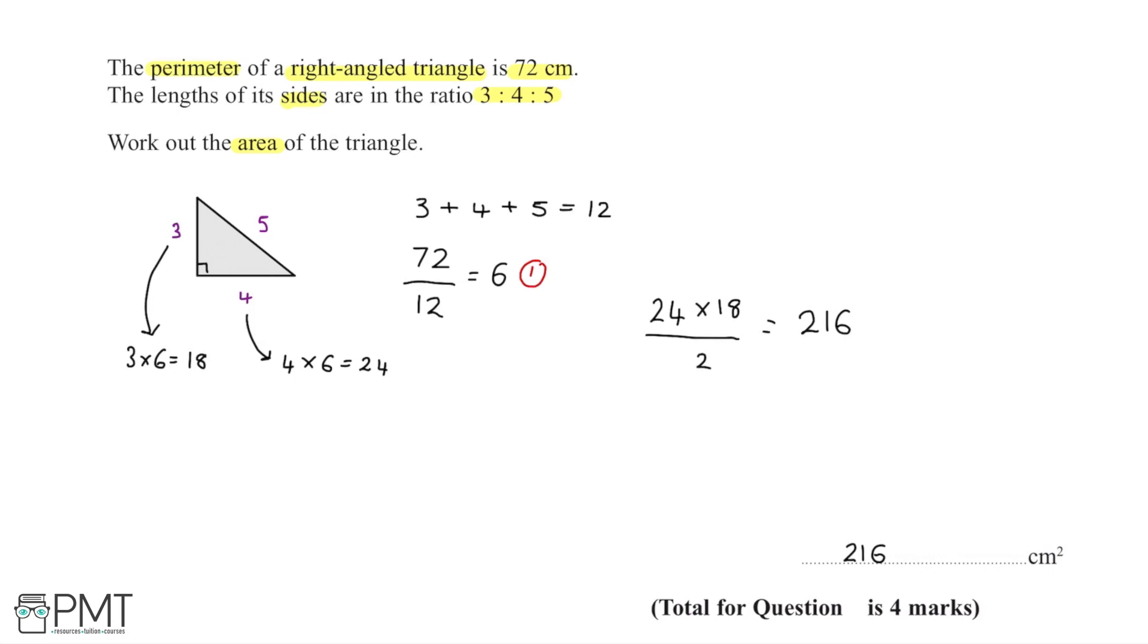The second mark is for finding either the base or height of the triangle—either the calculation of 24 or 18 earns this mark.